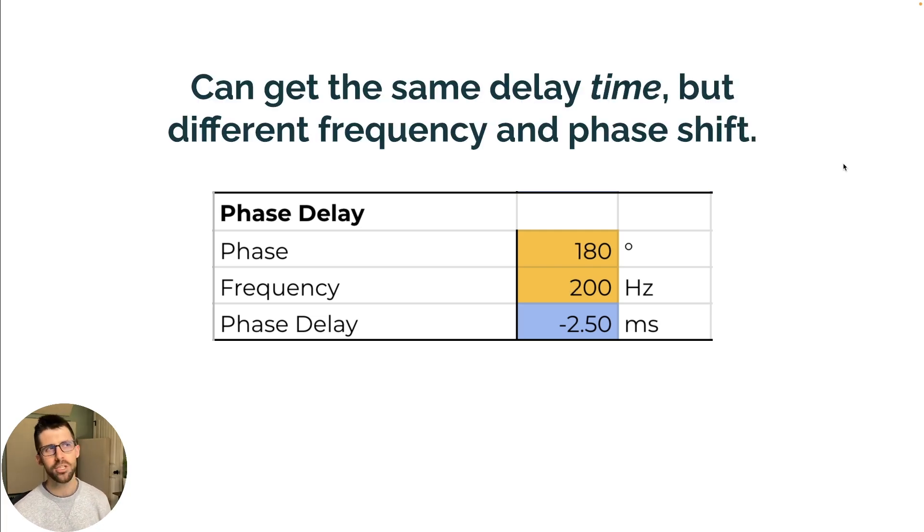What I think is interesting here is you can get the same delay time and the same output but with different frequency and phase shift. So what if I was 180 degrees offset at 200 hertz? I still get the same amount of phase delay. All I did was double the amount of phase shift and double the frequency and it is proportional, which is pretty cool.